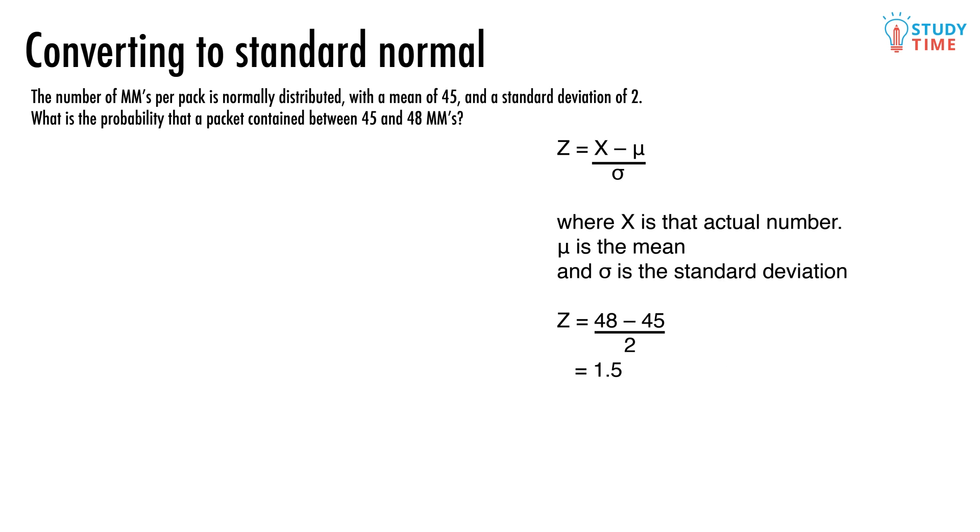The formula that we use to convert looks like this: Z = (X - μ)/σ, where X is the actual number we've been given, which here is 48, μ is the mean which is 45, and σ is the standard deviation which is 2.